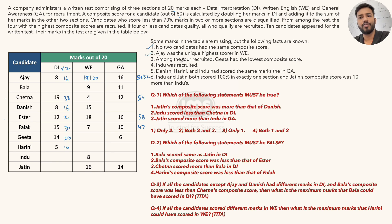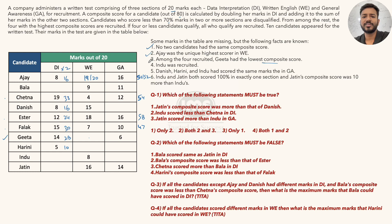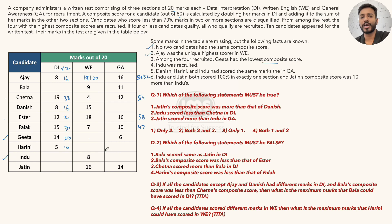Third statement: among the 4 recruited, Gita has the lowest composite score. So Gita is definitely recruited. Fourth statement: Indu was recruited — tick mark for Indu. Both Gita and Indu's scores are partially missing, so we'll keep these conditions in mind and revisit them as we uncover more information.